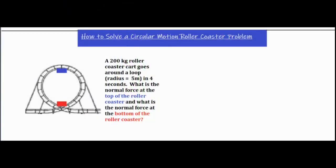In this video I'm going to be talking about how to solve a circular motion roller coaster problem. We're going to solve two different types of problems within this one. We have a 200 kilogram roller coaster cart that goes around a loop with a radius of five meters and it goes around in four seconds. What is the normal force at the top of the roller coaster and what is the normal force at the bottom?